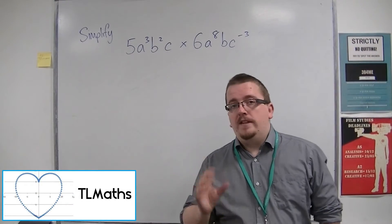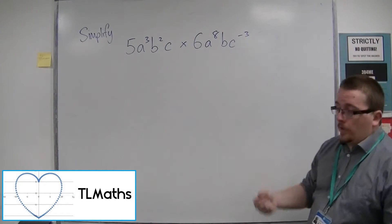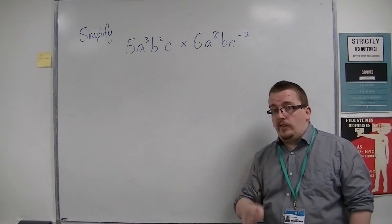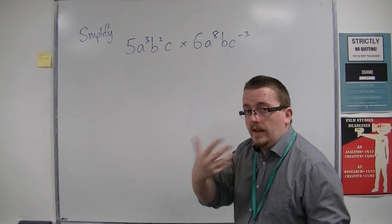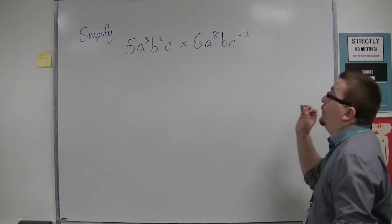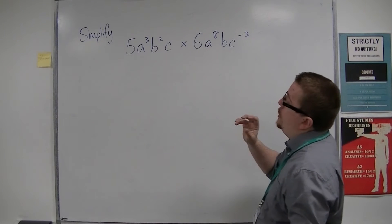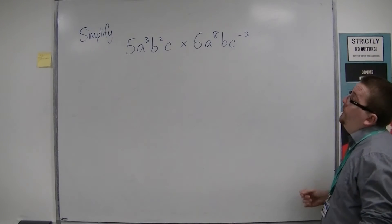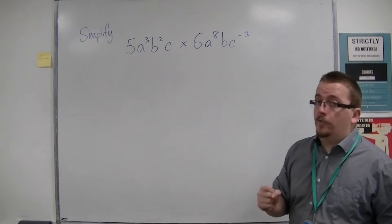An exam-style question with indices may look like this. We're going to see three examples of these in the next few videos. So simplify 5a³b²c times 6a⁸bc⁻³.